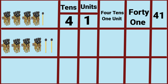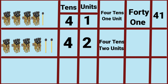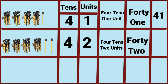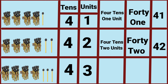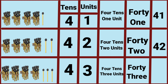Four tenths and two units makes forty-two. Four tenths and three units makes forty-three.